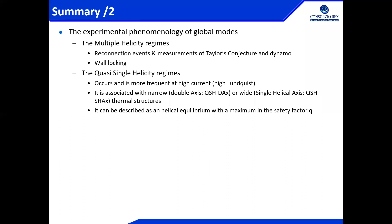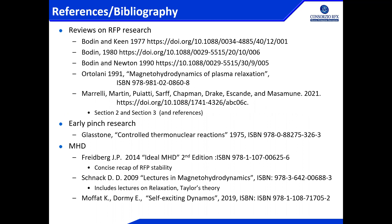One of these global modes was responsible for the transition from multiple helicity to quasi-single helicity states, which then split in two: the quasi-single helicity double helical axis — whenever the amplitude was not high enough — and then the single helical axis. One of the key points is that this can be described not only as a small perturbation but as an equilibrium — a helical equilibrium. The RFP was born axisymmetric, but in the end it can be described as a helical equilibrium with a maximum in the safety factor Q. There are three reviews and some early pinch research books which may be useful for this part.